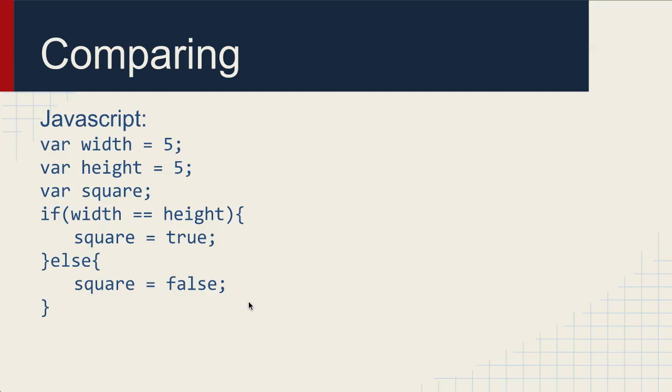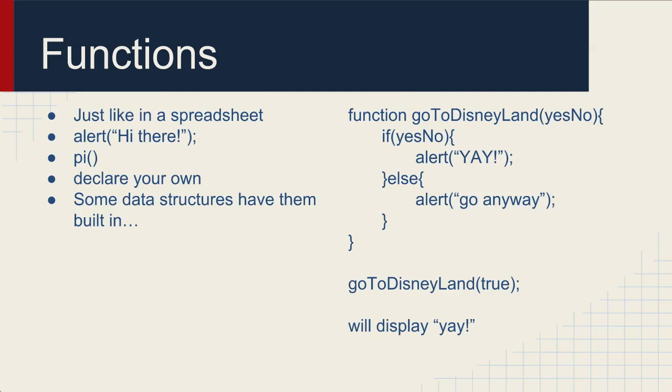Again, just like in spreadsheets, in JavaScript there's a function called alert, and what that does is it makes an alert box pop up that has whatever this text is and an OK button. We'll see that in one of the other videos. They're always a keyword like alert or pi, and then two parentheses. You can declare your own and some data structures have them built in.